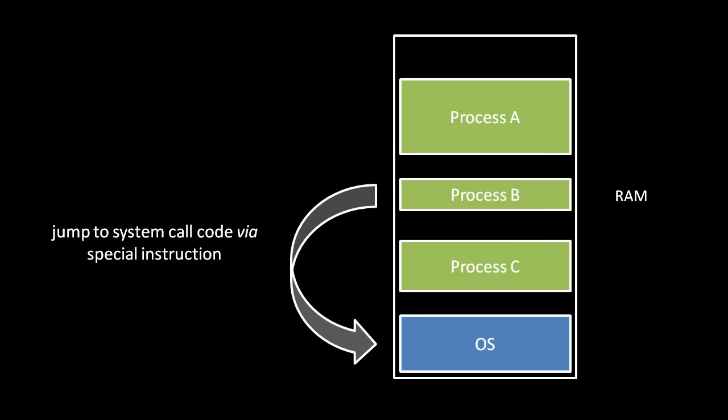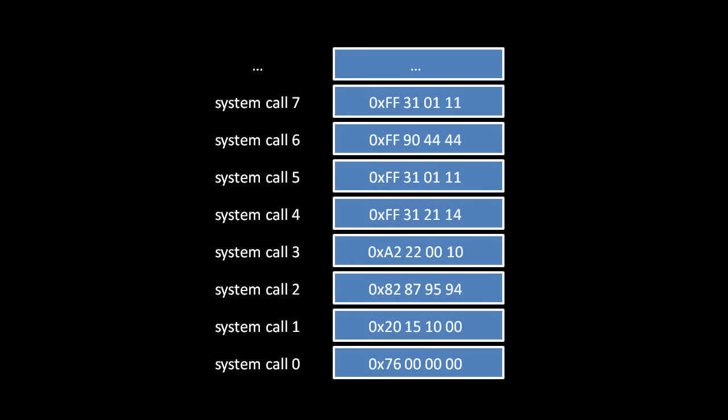To invoke a system call, a process must use a specific CPU instruction, usually called syscall, in which the process specifies a system call number. When this instruction is invoked, the processor looks in the system call table for the address of the routine corresponding to the number, and jumps execution to that address.